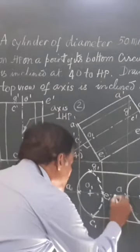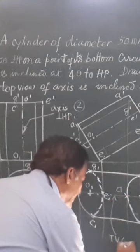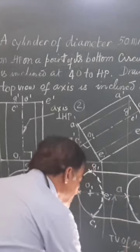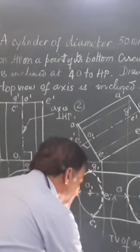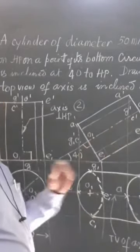This is O1, the top view of the axis, or axis of the object. The axis is parallel to VP. So observe: the axis is not inclined to HP; it is parallel to VP.